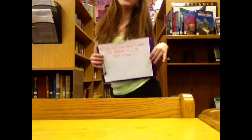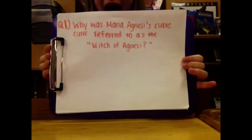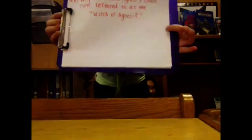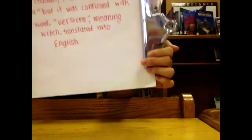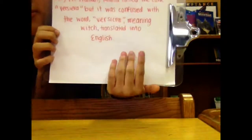Question number one: Why was Maria Agnesi's cubic curve referred to as the Witch of Agnesi? Time is up! The answer is: in Italian, Maria called the curve "versiera," but it was confused with the word "avversiera," meaning witch, when translated into English.